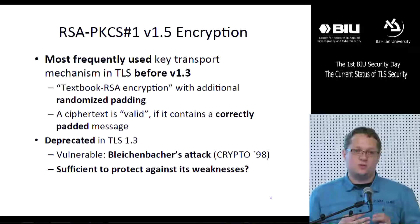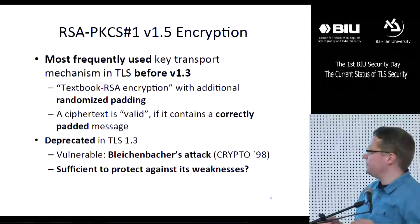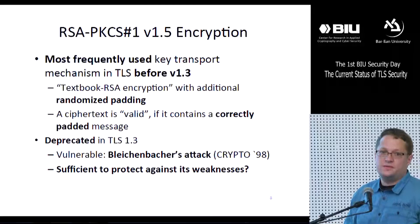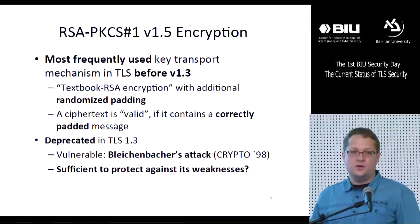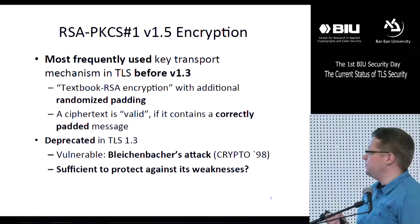PKCS1 version 1.5 encryption is not used anymore in TLS 1.3, for many reasons. The first is that it doesn't provide forward security. But most cryptographers would agree the second very good reason is that it's vulnerable to a classical chosen ciphertext attack by Daniel Bleichenbacher from Crypto '98. The obvious question is: is it sufficient to remove this encryption scheme from the standard to protect against its weaknesses? Apparently it should be — but it is not, at least in practice.